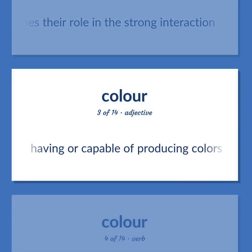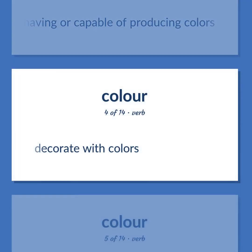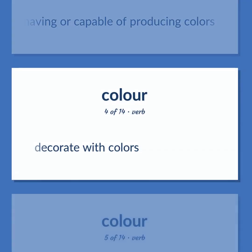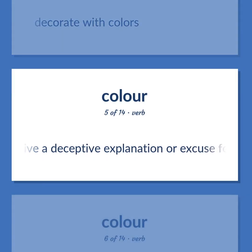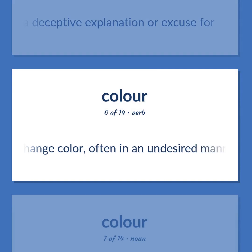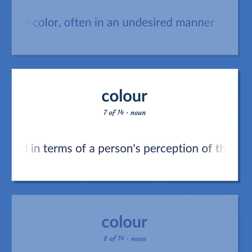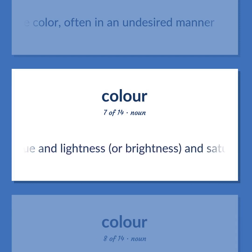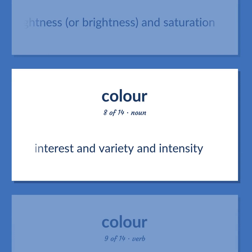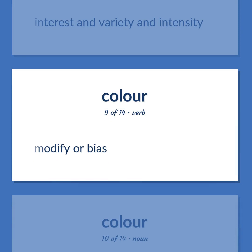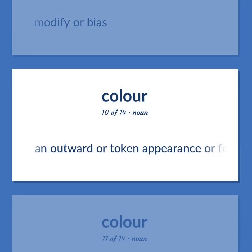Color: Having or capable of producing colors. Decorate with colors. Give a deceptive explanation or excuse for. Change color, often in an undesired manner. The appearance of objects or light sources described in terms of a person's perception of their hue and lightness or brightness and saturation. Interest in variety and intensity. Modify or bias.